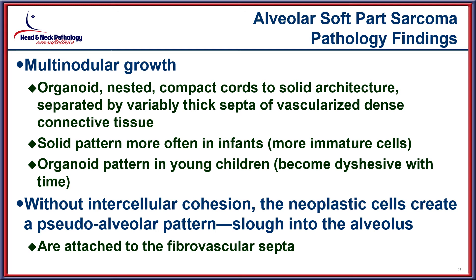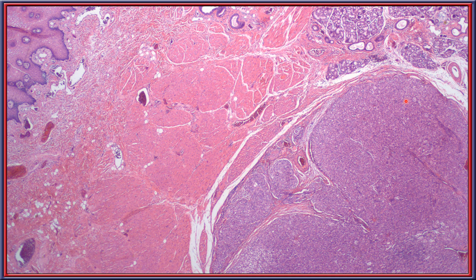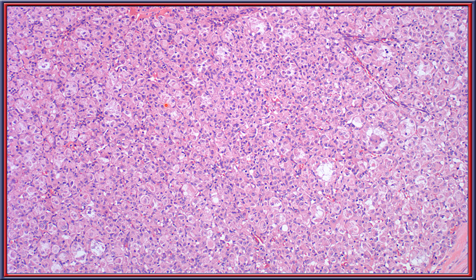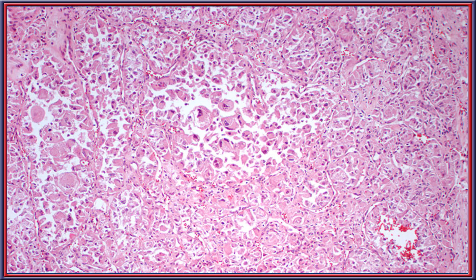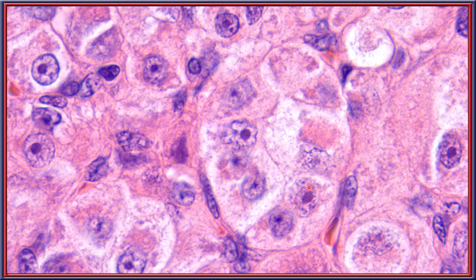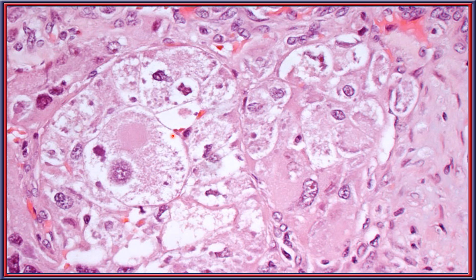Alveolar soft part sarcoma typically shows a multinodular growth with an organoid or nested pattern, more solid in earlier lesions and organoid as it becomes more adhesive in younger patients, resulting in a pseudo-alveolar pattern in the center. There is an intact surface epithelium with lobules of neoplastic cells deep in the stroma separated by a well-developed fibrovascular stroma. The large polygonal cells have one or more vesicular nuclei and prominent nucleoli, but tend to show mild pleomorphism, scant mitoses, and very rare necrosis. High power demonstrates large cells with both high and low nucleocytoplasmic ratios and abundant eosinophilic cytoplasm.